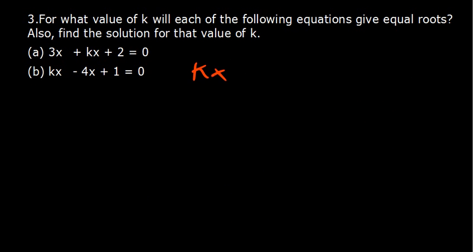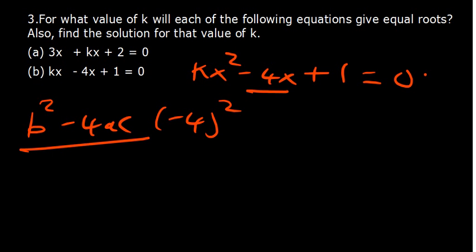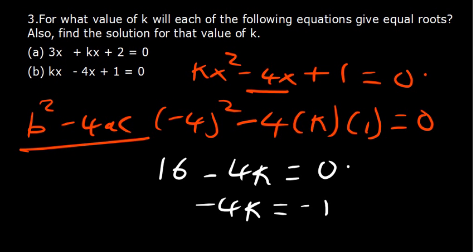For the second part, we have kx squared minus 4x plus 1 equals 0. Looking at the discriminant, b is negative 4 and we need b squared minus 4ac equals 0. So negative 4 squared minus 4 times k times 1 equals 0: that's 16 minus 4k equals 0, giving 4k equals 16, so k equals 4.